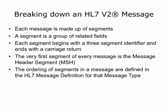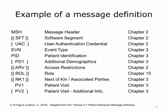Each message is made up of segments. A segment is a group of related fields. Each segment begins with a three-character segment identifier and ends with a carriage return. The very first segment of every message is the message header segment, whose segment ID is MSH. The ordering of segments in a message matters and is defined in the HL7 message definition for that message type. Each type of HL7v2 message is defined in the standard with a message definition, which shows what segments can appear in a message, how often, and in what order. It gives the segment IDs, short descriptions, and provides the chapter in the HL7v2 specification where the segment is defined. If a segment is optional, it is surrounded with square brackets.